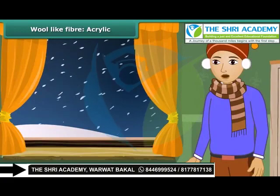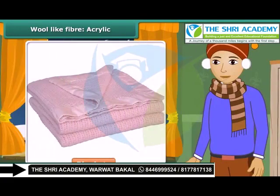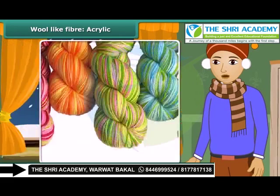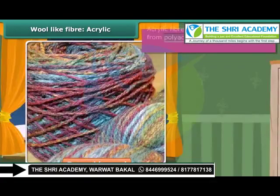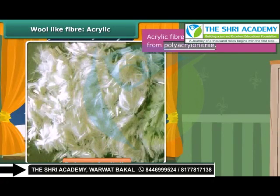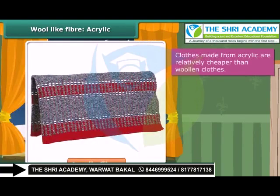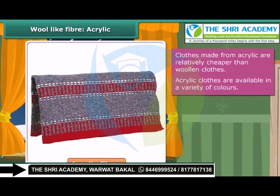To protect us against cold winters we wear sweaters and shawls and use blankets. Many of these are actually not made from natural wool, though they appear to resemble wool. These are prepared from acrylic fibers, which are synthetic fibers made from polyacrylonitrile. Acrylic is lightweight, soft and warm with a wool-like feel. The wool obtained from natural resources is quite expensive, whereas clothes made from acrylic are relatively cheaper and available in a variety of colors. The disadvantages are that acrylic tends to fuzz easily and does not insulate the wearer as well as wool or cashmere.